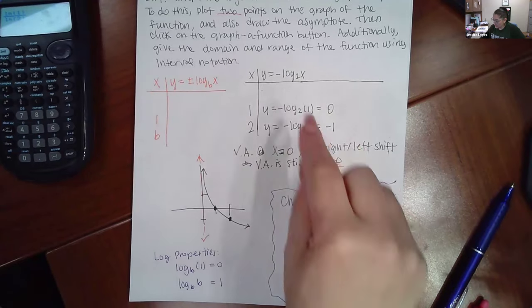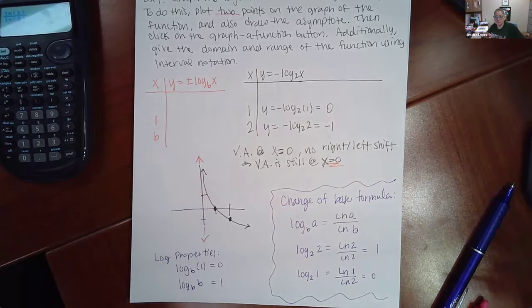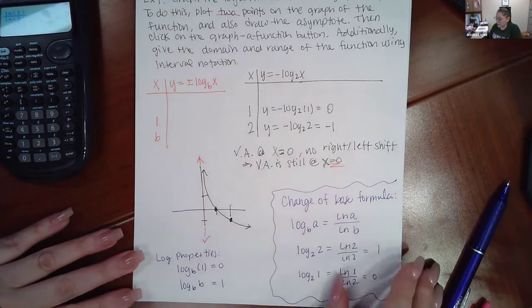If I had something like parentheses x minus two, then that means it's shifting two to the right. And then therefore, this asymptote would actually move two units over.